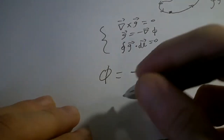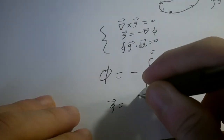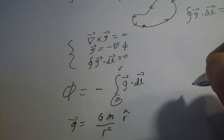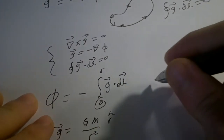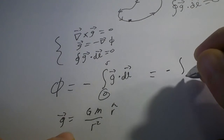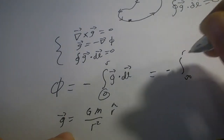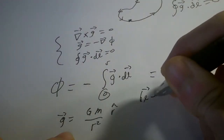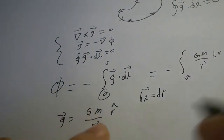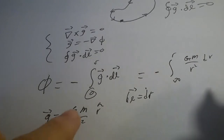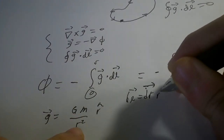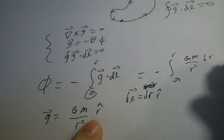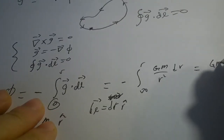For example, let's take a gravitational field of a point source. This is Gm/r² r-hat. Let's bring this point from infinity to a point r. So this is minus the integral from infinity to r of Gm/r² dr, where dl equals dr. If you look at the cylindrical conversion between dl and dr, you'll see. If we integrate this, you get Gm/r. This is the potential for a point.